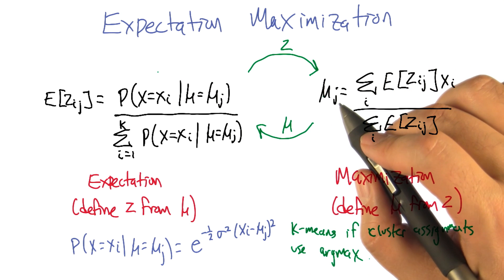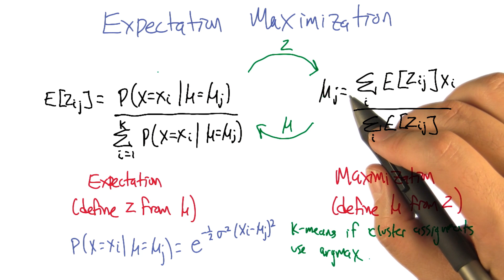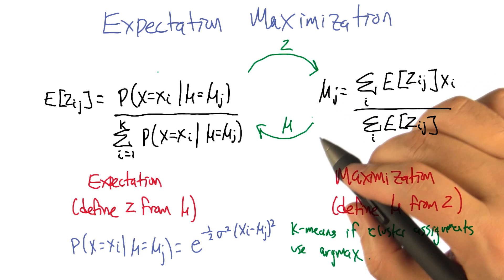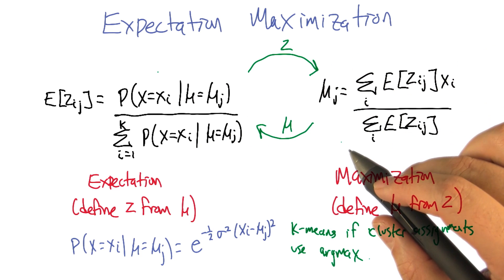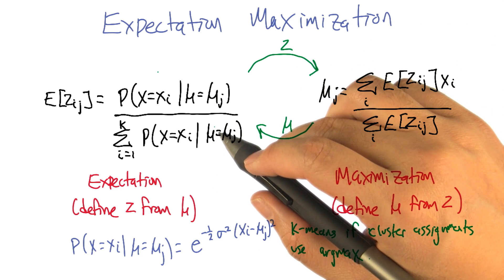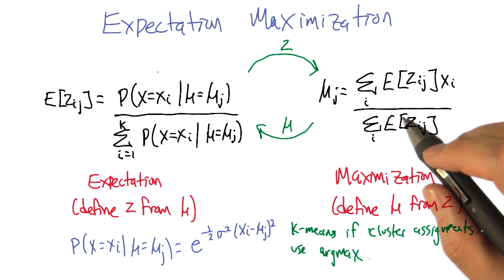So it really does end up being an awful lot like the k-means algorithm, which is improving in the error metric, this squared error metric. This is actually going to be improving in a probabilistic metric, right? The data is going to be more and more likely over time.